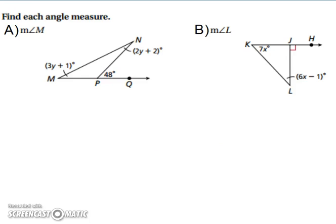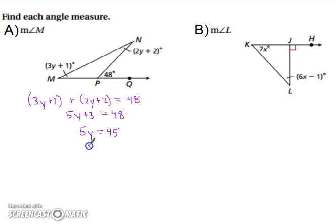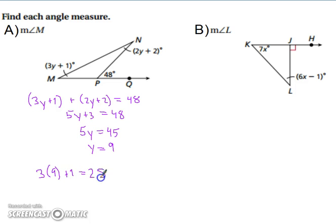Take a moment and pause the video and try the next two on your own. Our two remote interior angles add together to equal the exterior angle of 48 degrees. Combining like terms, we have 5Y plus 3 equals 48. Subtract 3 from both sides: 5Y equals 45. Divide by 5: Y equals 9. Since we want the measure of angle M, substitute 9 in for Y: 3 times 9 plus 1 gives us 28 degrees.